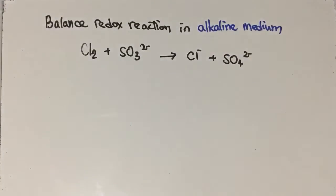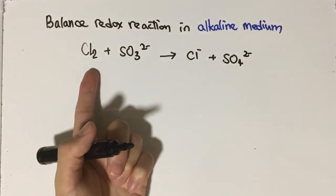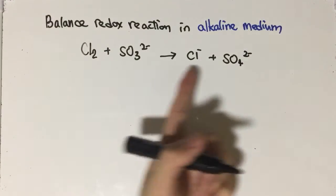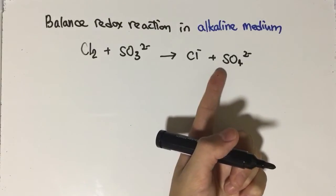Hi everyone, today I would like to show you how to balance redox reactions in alkaline medium. This is the reaction: chlorine plus sulfite ion will become chloride ion and sulfate ion.